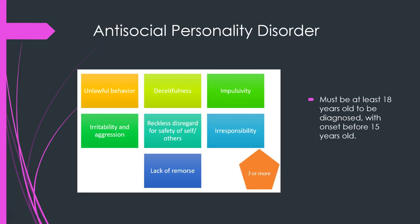Antisocial personality disorder is also listed in personality disorders. You must be at least 18 years old to receive the diagnosis, and it needs to have started at least by age 15. Criteria include unlawful behavior, lack of remorse, being irresponsible, impulsive, aggressive, deceitful, and reckless.